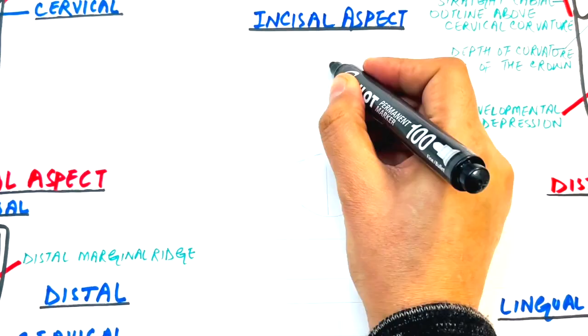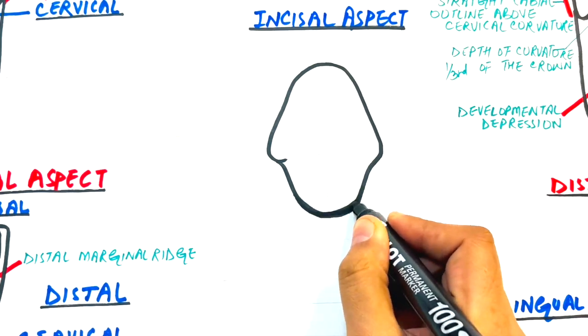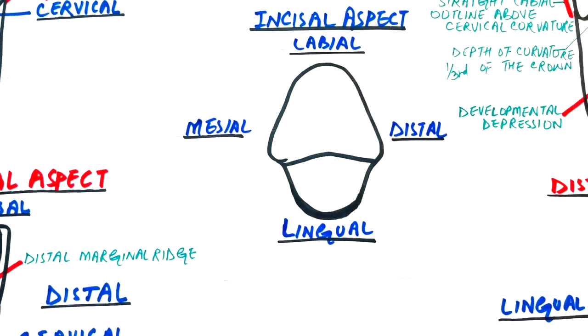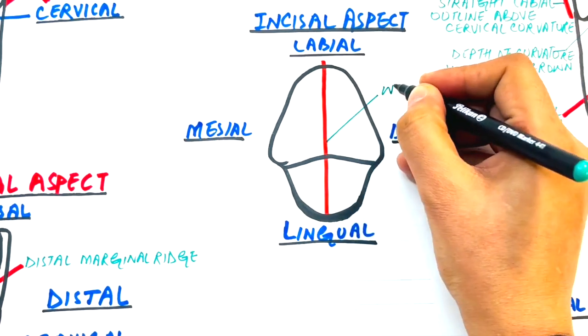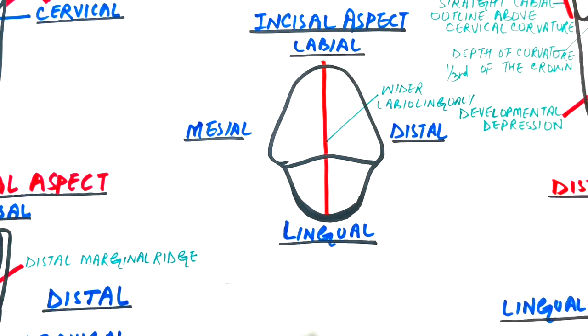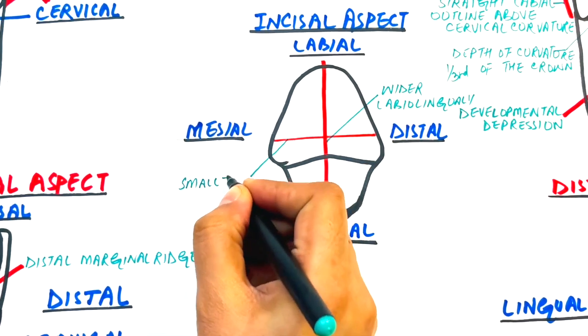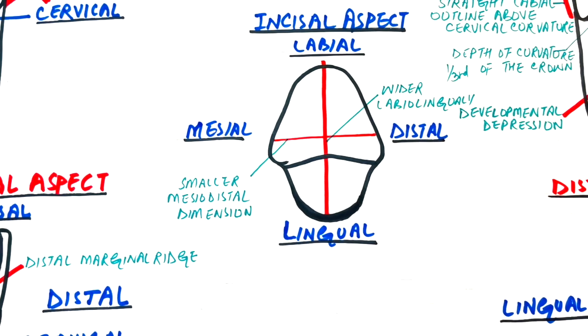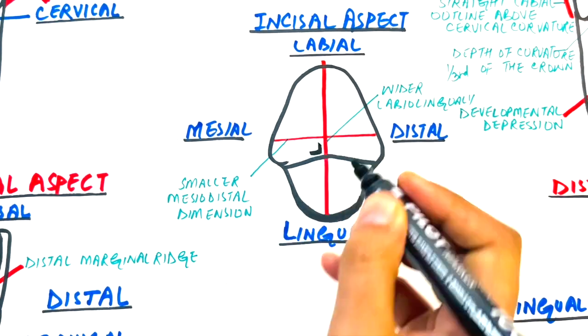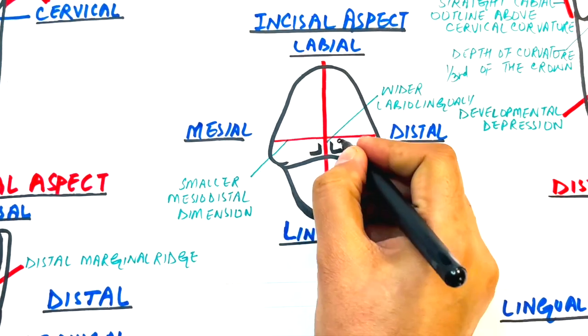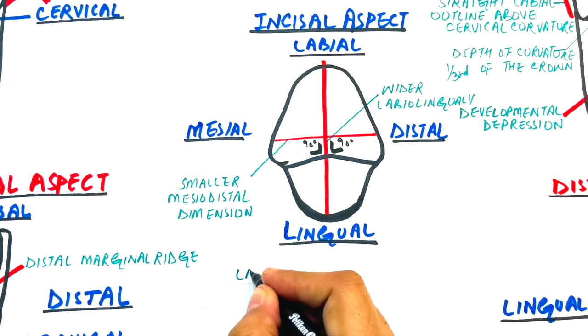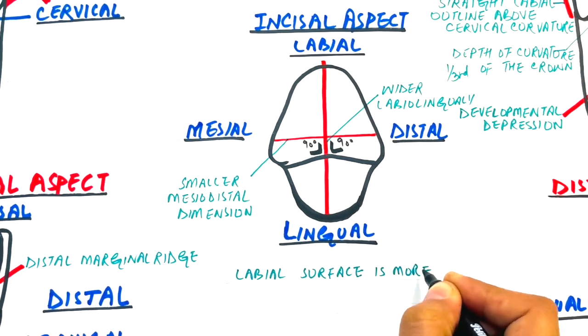From the incisal aspect, the tooth has a labial, lingual, mesial, and distal outlines. From this aspect, the labial-lingual dimension is greater than the mesiodistal dimension of the tooth. The incisal aspect of the tooth is straight and forms a 90-degree angle to align bisecting the crown labiolingually. The labial surface of the tooth is more visible than the lingual surface.